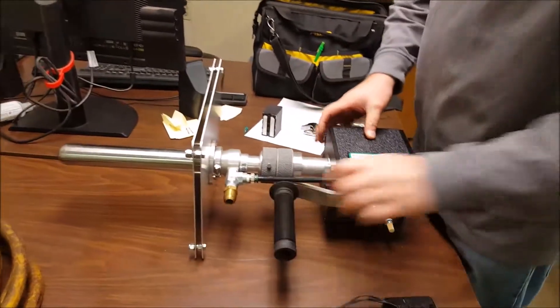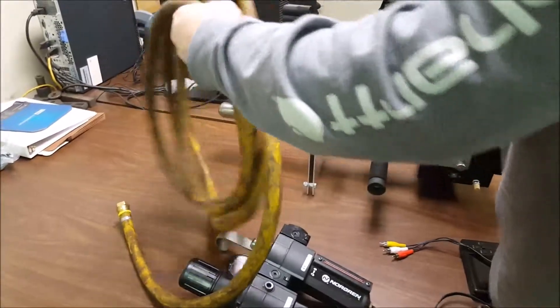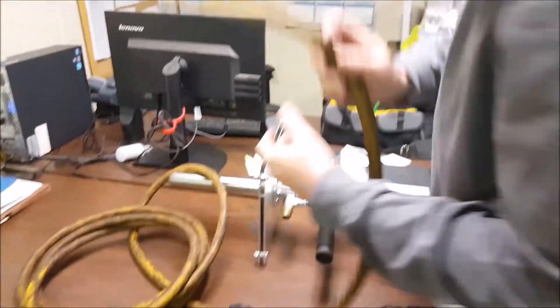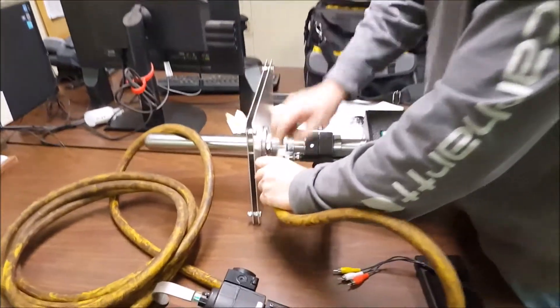Now, we're going to install the air hose. This is the hose that's going to be going to your regulator. Attach here on the bottom, like so.